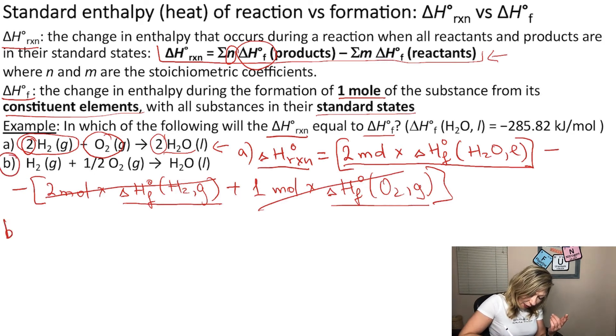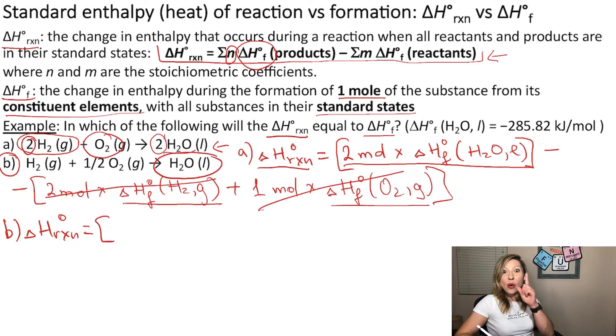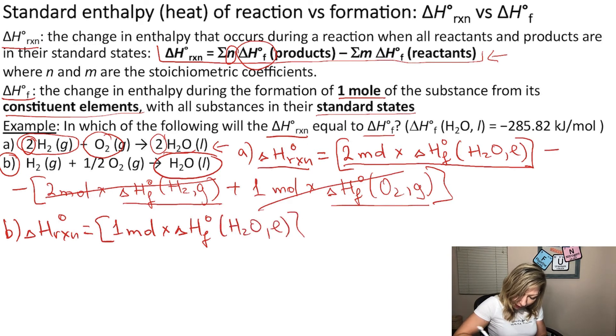So in case of B, if I write out the same expressions, what will be the real difference? Let's start with my product. How many moles of liquid water do I have? Only one. So I need to take one mole multiplied by the heat of formation of H2O liquid.